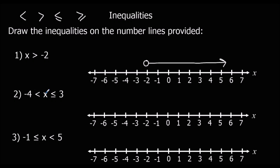The second one says x is bigger than minus 4 but less than or equal to 3. So we draw a circle on minus 4, and on 3 we draw a circle that's coloured in — coloured in to indicate it can equal 3. And we join them up with a straight line.